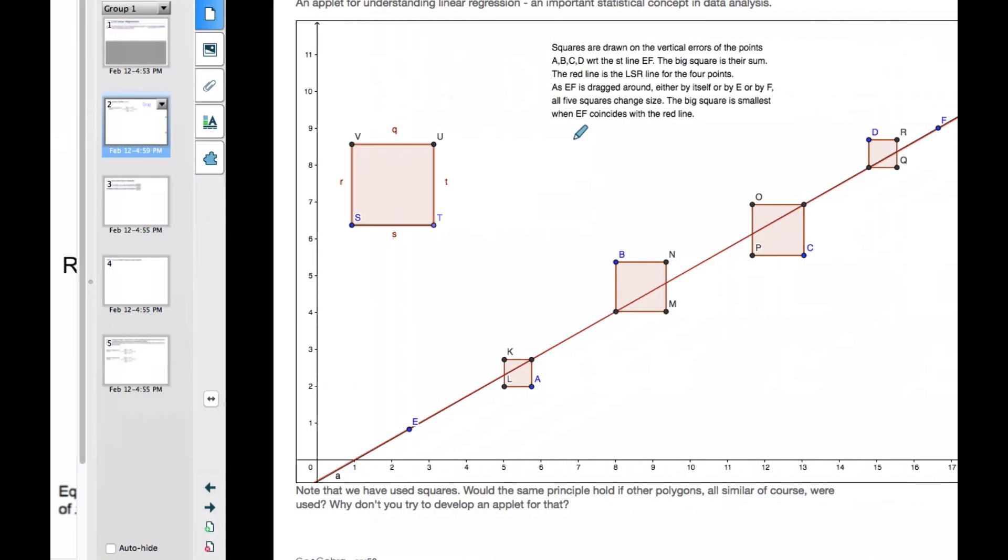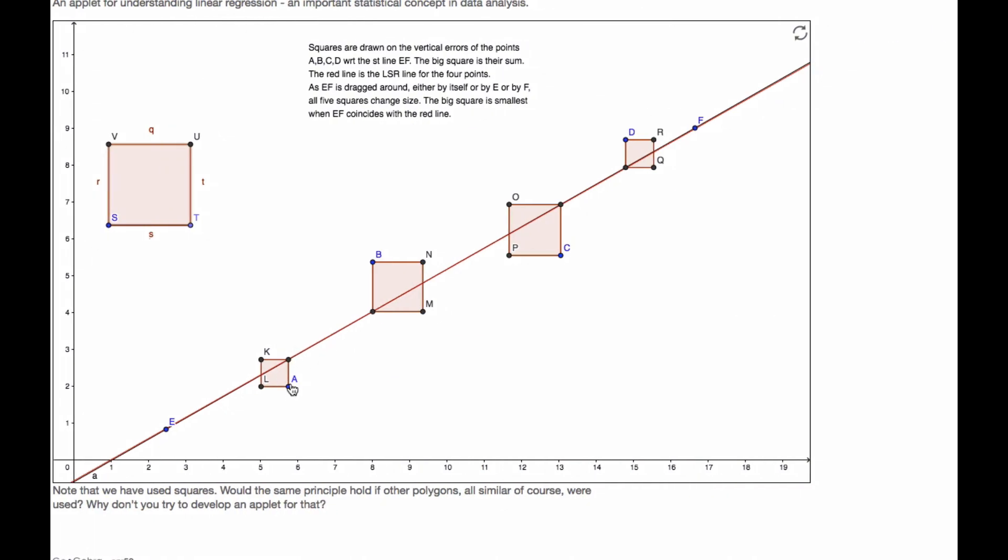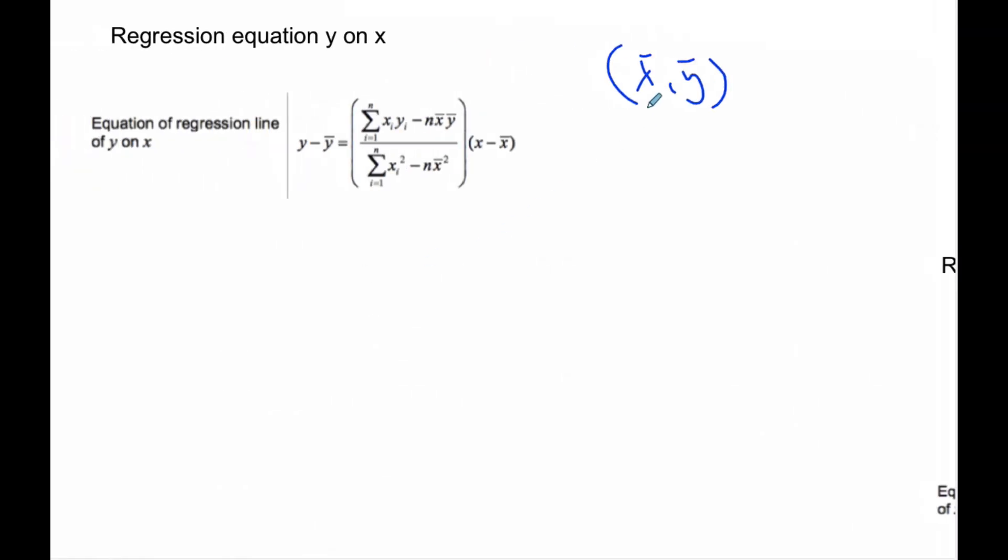So we have two different kinds of lines. We have a regression equation of Y on X, which looks like this ugly mess here. This is straight from your formula booklet. So we have Y minus Y bar. Y bar, we have the covariance over the variance of X is the slope, X minus X bar. So note that the point X bar, Y bar is on the graph. X bar, Y bar, I take all the X values, I average them, and all the Y values, and I average them. It's always on the graph.